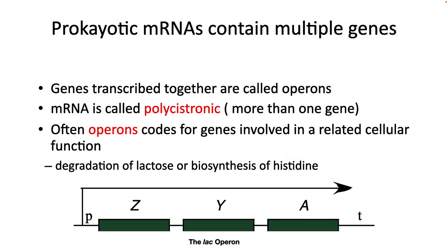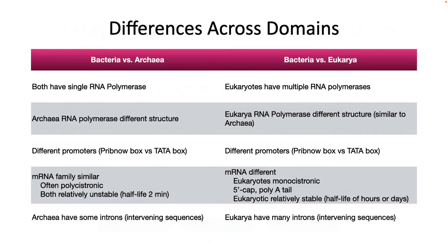Many genes in bacteria are polycistronic, meaning more than one gene is transcribed at a time. Often these operons encode genes that are all involved in the same process — for example, the catabolism of lactose or the biosynthesis of histidine. That's the process of transcription in bacteria. Overall, it is very similar in other domains, but there are differences. The table above summarizes them.